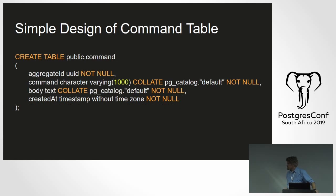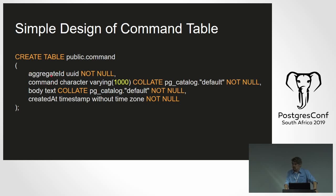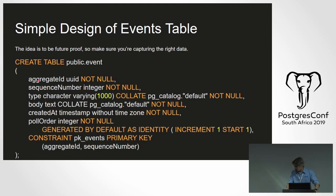These tables can get big. One strategy is making a table more on the event side per aggregate or aggregate type, so you can keep them smaller instead of bunching all your events into one store. This is a command table — if you're interested in storing commands. You have your aggregate ID linking back to your aggregate, which is a business object, and then the command type, which is a plain string name used for replaying.